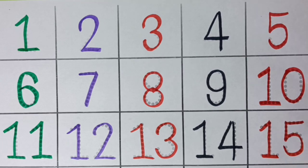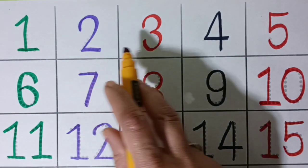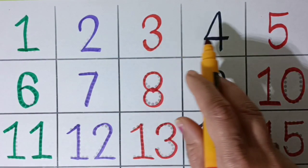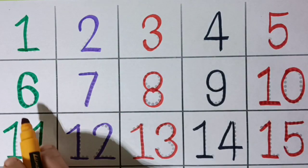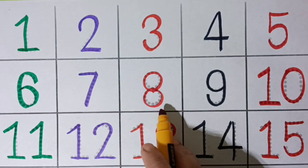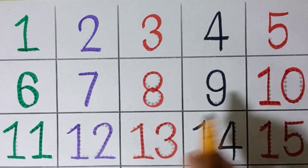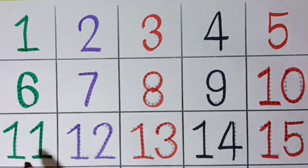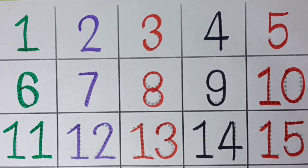Repeat children. 1, 2, 3, 4, 5, 6, 7, 8, 9, 10, 11, 12, 13, 14, 15.